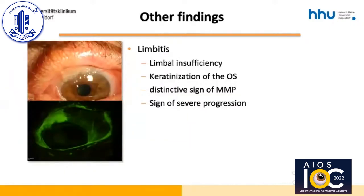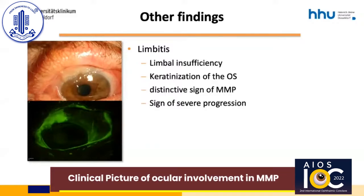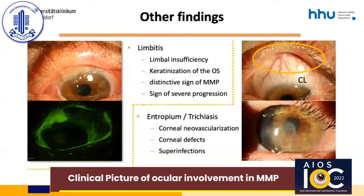There are other clinical findings that are not part of the Foster classification. First, as shown on the left, is limbitis. It occurs in 12 to 28% of the eyes and may be regarded as a distinctive sign of ocular MMP associated with more severe disease progression. Eyelid malposition and trichiasis eventually develop and, together with secondary dry eye, chronic limbitis, and subsequent limbal stem cell failure, contribute to keratopathy. Corneal defects may develop followed by superinfections and neovascularization. About 15% of patients have or will develop glaucoma.